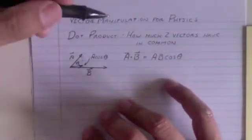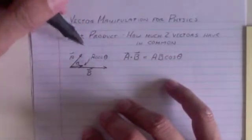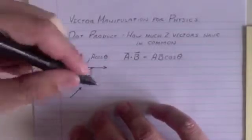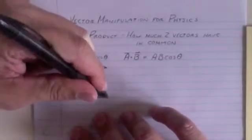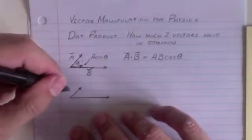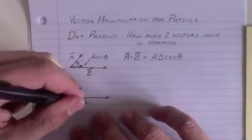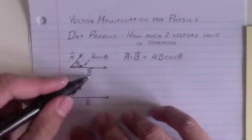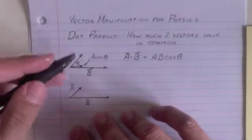And you could do it the other way. You could find out what component, let me try that down here. Here's A, here's B, and we want to find out, again, sort of how much they have in common. I want, let's take a look at what part of B is in the same direction as A.